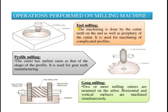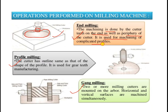Other operations that can be carried out include end milling, profile milling, and gang milling. In end milling, the machining is done by cutting points or tips available on the end as well as the periphery of the cutter. The cutter has cutting tips along its surface and can follow a contour-like structure to remove material from the work piece. It is used for machining complicated profiles, that is, contouring.